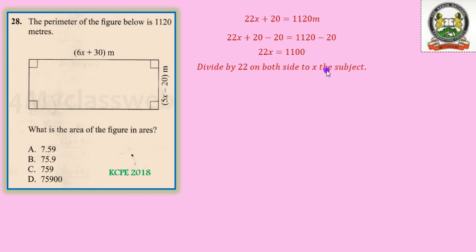Now we have to divide by 22 on both sides so that we make x the subject. In other words, we are left with x on one side, and so when we divide on the left by 22 we shall be left with x, and on the right we shall be left with 50. And therefore the value of x will be equal to 50.